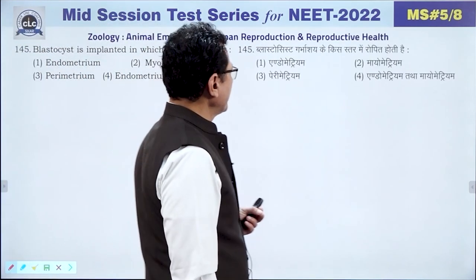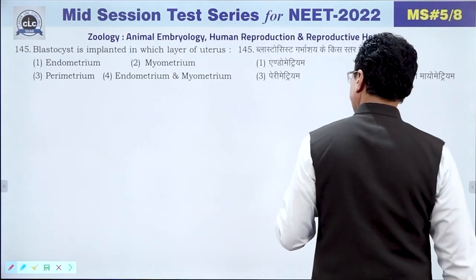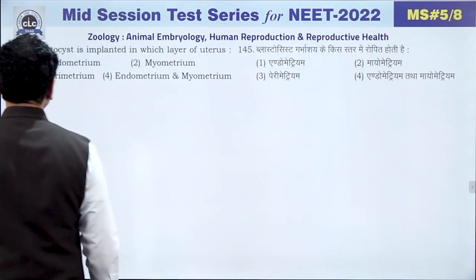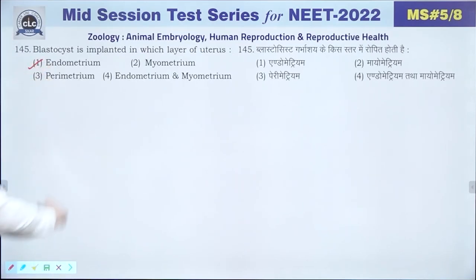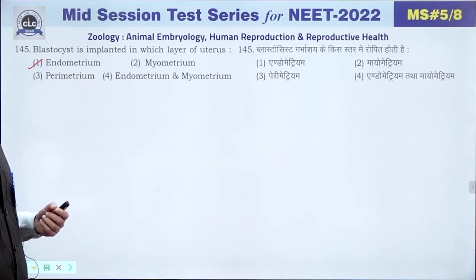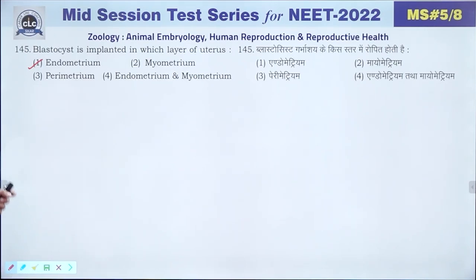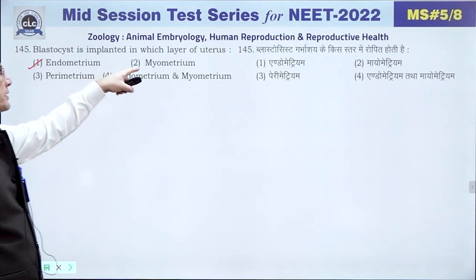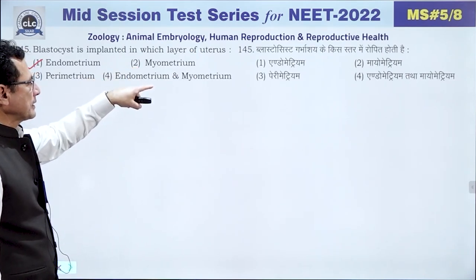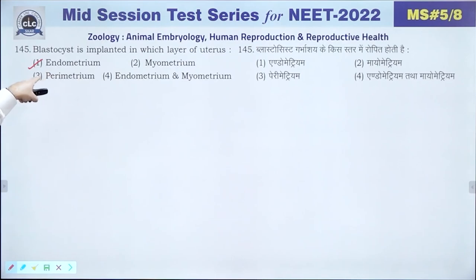Question 145: Blastocyst implantation occurs in the endometrium of the uterus, not the myometrium. Myometrium is only the muscle layer. The answer is endometrium.